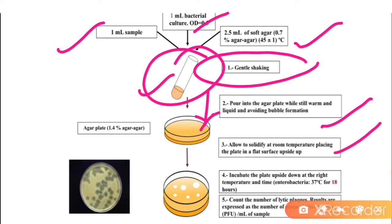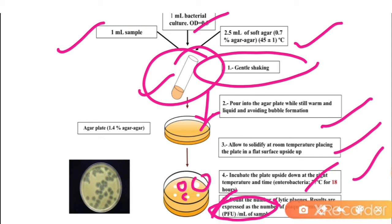Allow the plate to solidify at room temperature by placing it on a flat surface upside up. Then incubate the plate upside down at 37°C for 18 hours. After incubation, count the plaques and record results as plaque forming units per ml of sample.